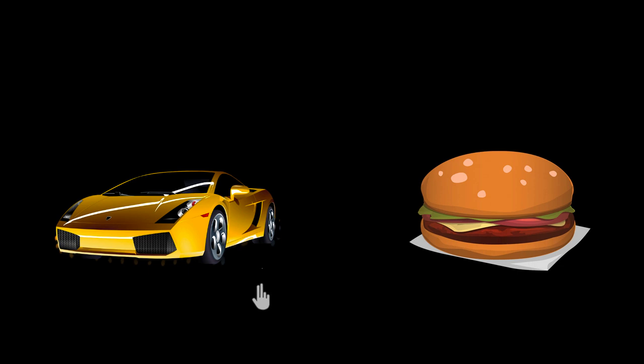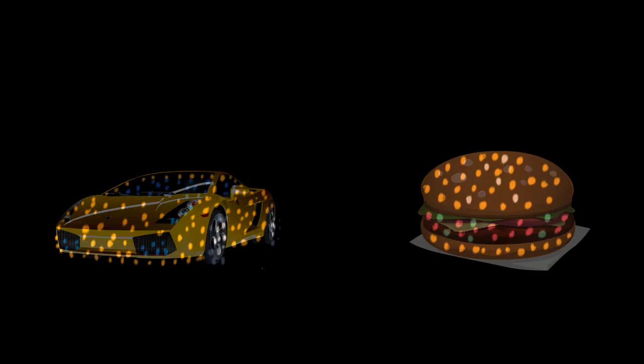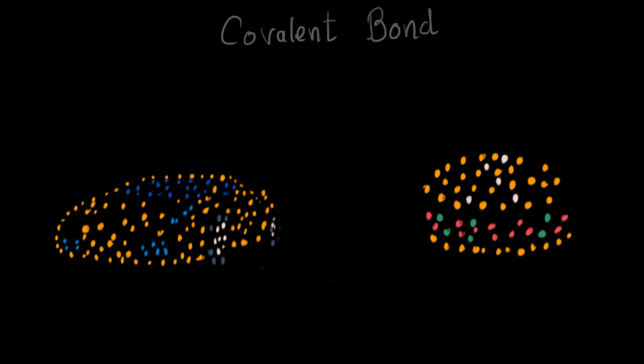There are so many awesome things around us, and all of these are made up of atoms. But have you ever wondered what makes these tiny atoms stick together in this shape? Well, that happens because of different kinds of chemical bonds between these atoms. And today we are going to talk about one of them: covalent bond.